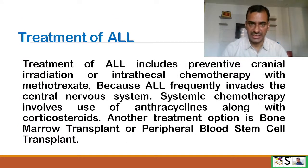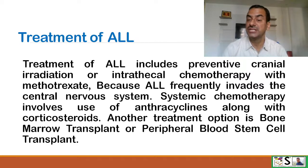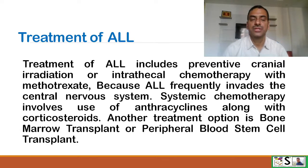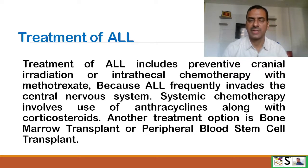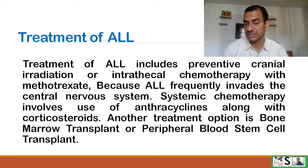Treatment of ALL includes preventive cranial irradiation or intrathecal chemotherapy with methotrexate, because acute lymphoid leukemia frequently involves the central nervous system. Systemic chemotherapy also involves anthracyclines along with corticosteroids. Another treatment option is bone marrow transplant or peripheral blood stem cell transplant.